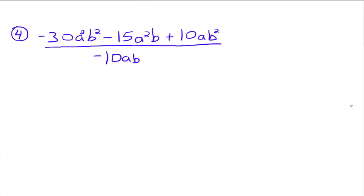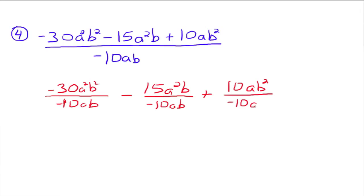I'm going to do one more. So this time we're going to write up three separate fractions. Negative 30 a squared b squared divided by negative 10 a b, minus 15 a squared b divided by negative 10 a b. We need to take that negative with us there. Plus 10 a b squared divided by negative 10 a b.